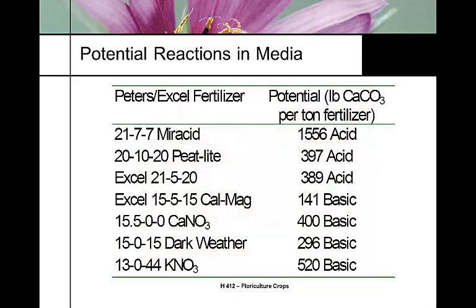When choosing fertilizers, consider their potential reaction — most fertilizers are rated as acid or basic based on how many pounds of calcium carbonate per ton of fertilizer it takes to neutralize them. An acidic fertilizer like Myracid (21-7-7), which is almost pure ammonium, requires more than three-quarters of a ton of calcium carbonate to neutralize it. Moderately acidic fertilizers are in the middle range, while Cal-Mag fertilizers are very basic — used by many growers to prevent soil pH from changing drastically over time.